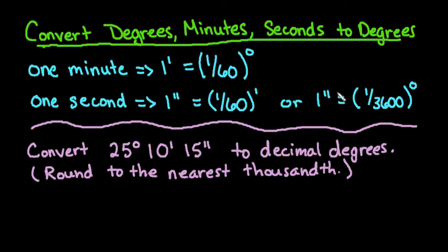Or you can say that one second is equal to 1/3600th of a degree. So if you're going from one second to degrees, instead of having to go from seconds to minutes and then minutes to degrees, you can go directly from seconds to degrees by using this conversion here.